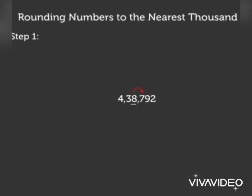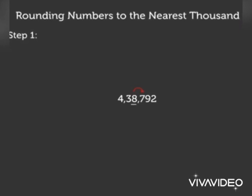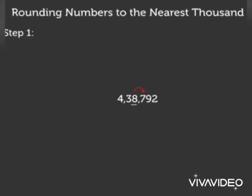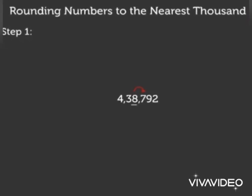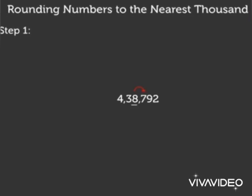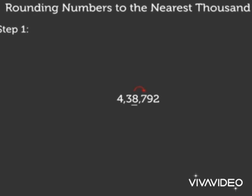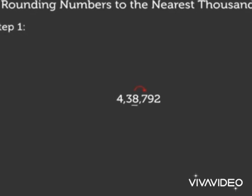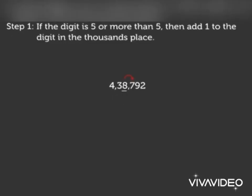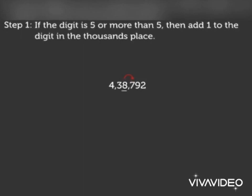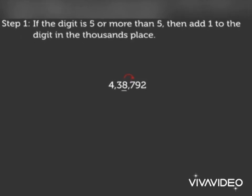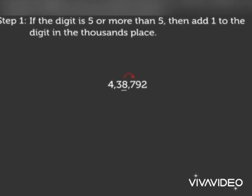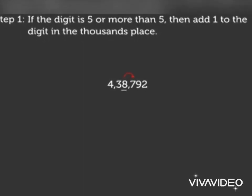First of all, look at the given number. To round this number to the nearest thousand, we need to follow two simple steps. First, look at the digit to the right of the thousand place.